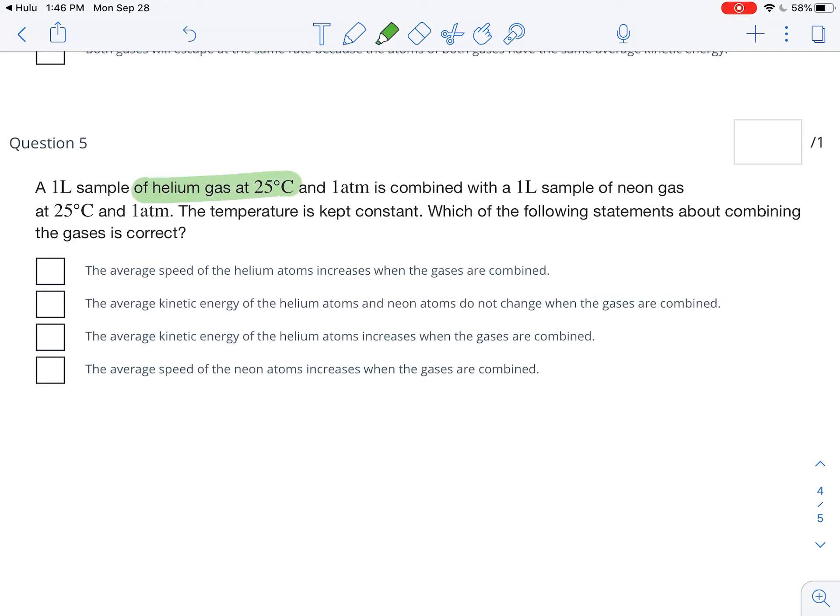So apparently I've got helium at 25 and I've got neon at 25 again. And now what I'm going to do is I'm going to combine the two of them together.